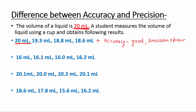In the second set — 16 ml, 16.1 ml, 16 ml, and 16.2 ml — all 4 results are very close to each other but very far from the actual value of 20 ml. So accuracy is poor because they are not close to the actual value, but they are almost the same as each other, so their precision is good.